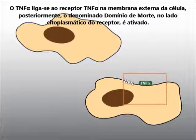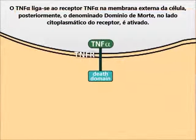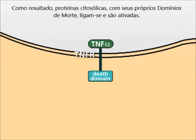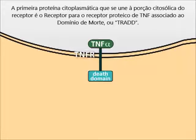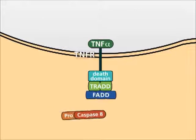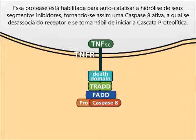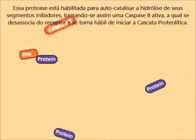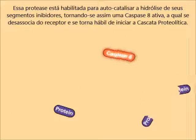TNF-alpha binds to the TNF receptor at the outer membrane of the cell. Subsequently, the so-called death domain at the cytoplasmic side of the receptor is activated. As a result, cytosolic proteins with their own death domains bind and are activated. The first protein that binds is the TNF receptor-associated protein with death domain, or TRAD. Next, the FAS-associated protein with death domain binds, which recruits ProCaspase 8. This protease is able to auto-catalyze the hydrolysis of its inhibiting segment, leading to active Caspase 8, which disassociates from the receptor and initiates the Caspase cascade.